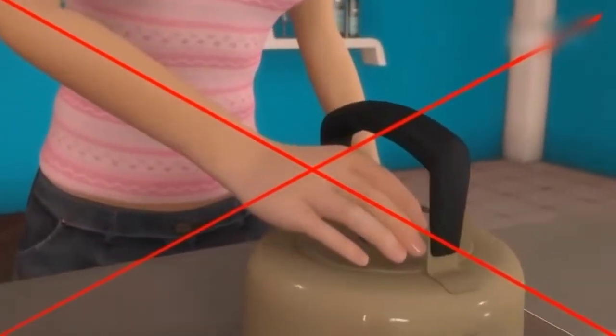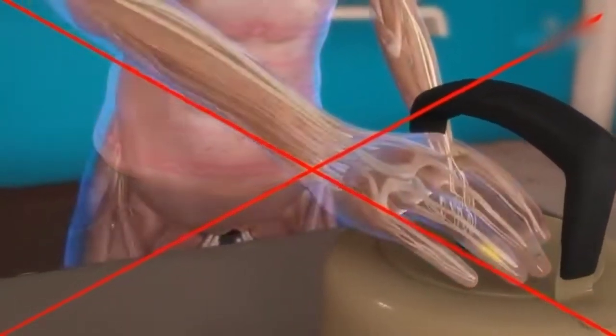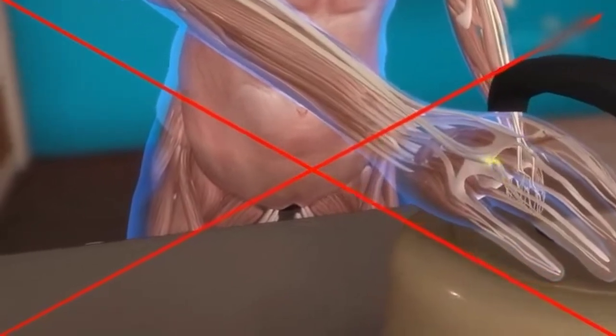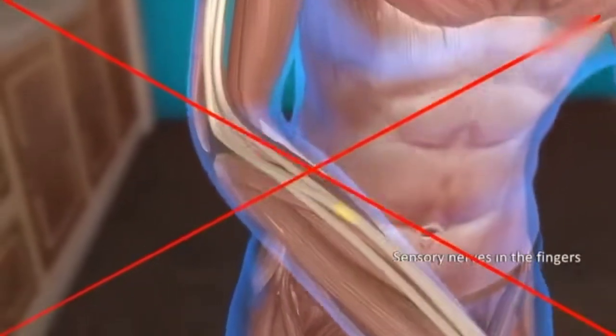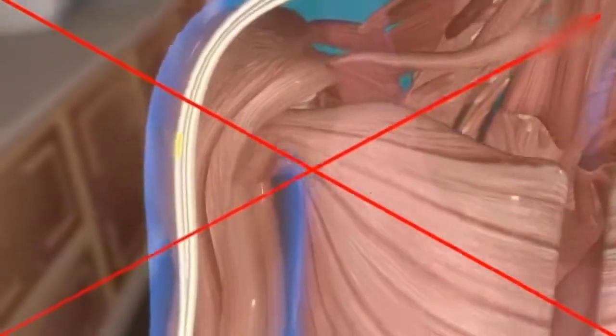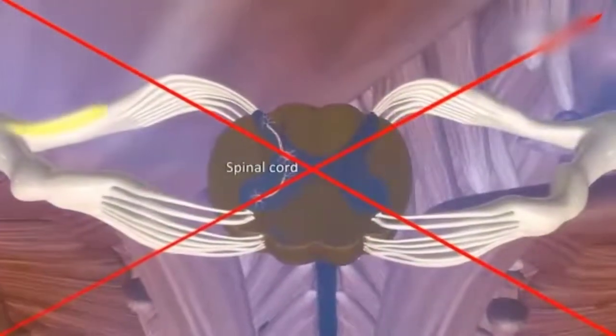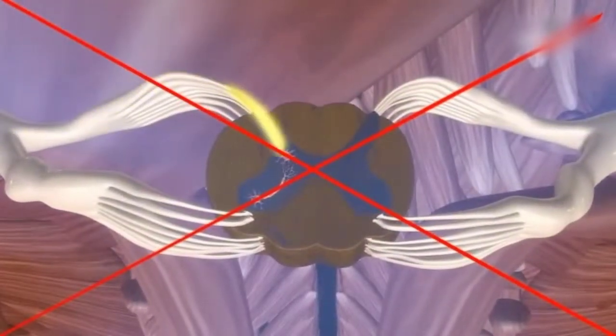Why does she do this? This happens as the receptors present in the fingers sense the heat from the kettle. The sensory nerves in the fingers absorb this impulse and transmit it to the spinal cord. From the spinal cord,